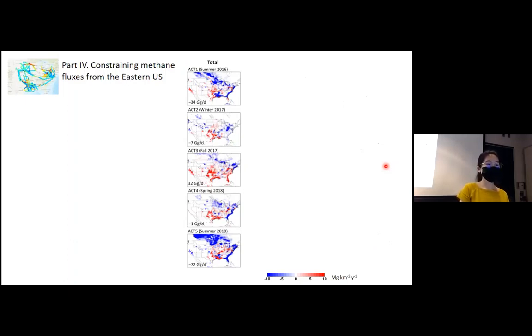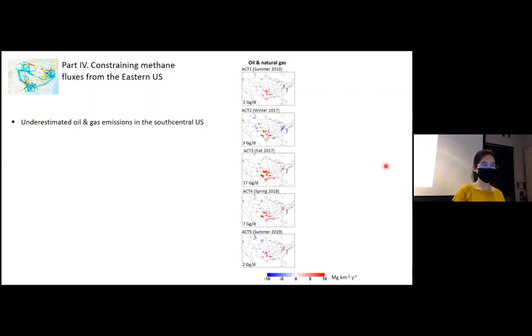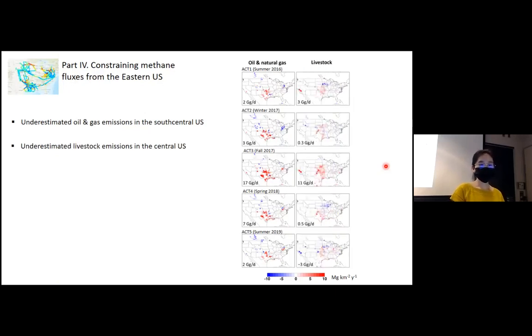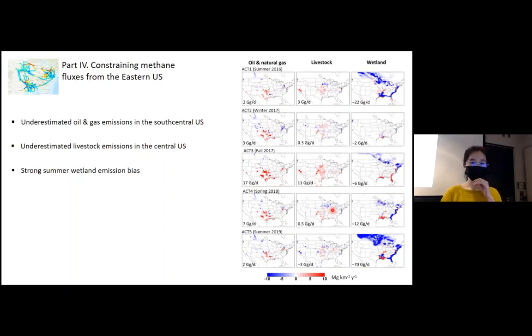The maps here show the correction to the total methane emissions for ACT 1 to ACT 5 from top to bottom. Then after partitioning the total correction to individual sectors, here are the results. We found that the current methane emission inventories underestimate oil and gas emissions in the south central U.S., underestimate livestock emissions in the central U.S. with some seasonally varying bias over the central midwest, and overestimate northern wetland methane emissions particularly during the summertime in ACT 1 and ACT 5, as well as some seasonally varying bias in the wetlands along the southeast U.S. coast.